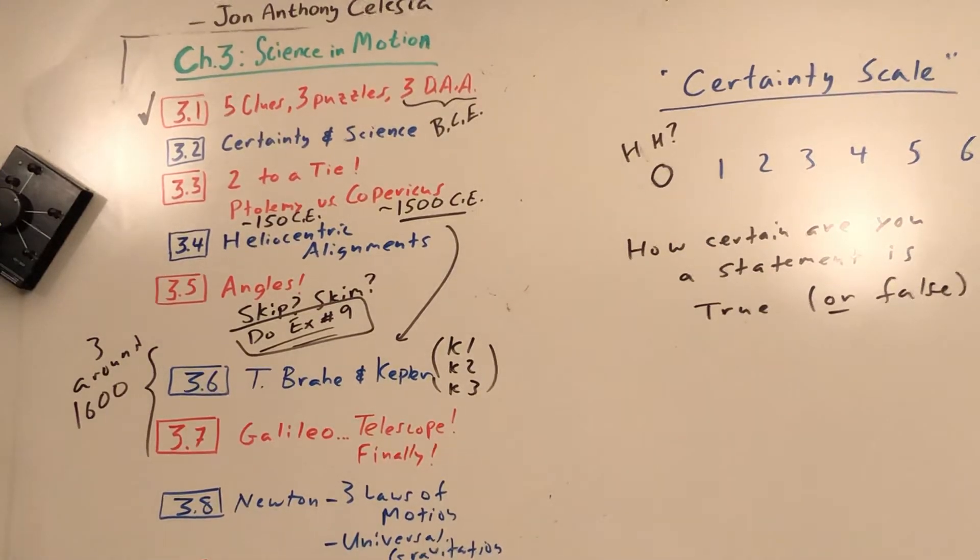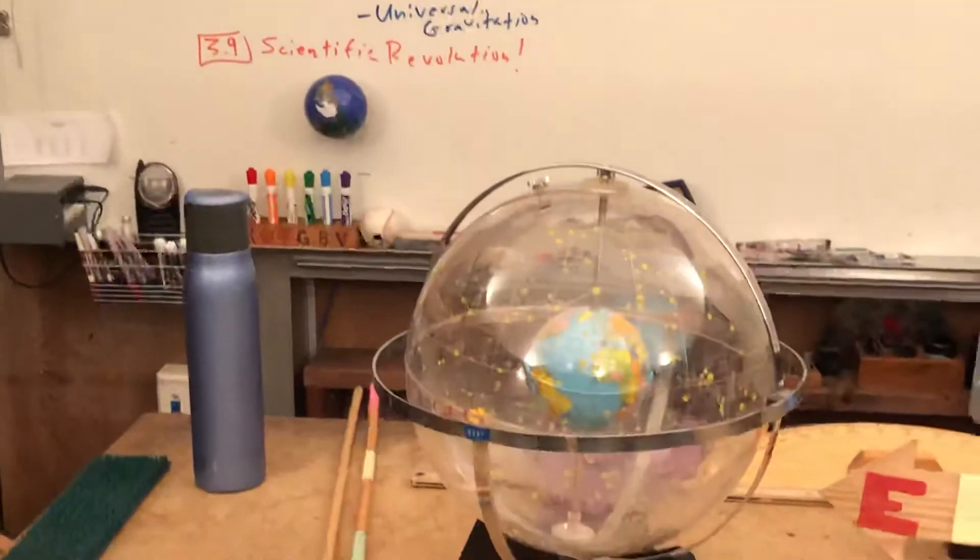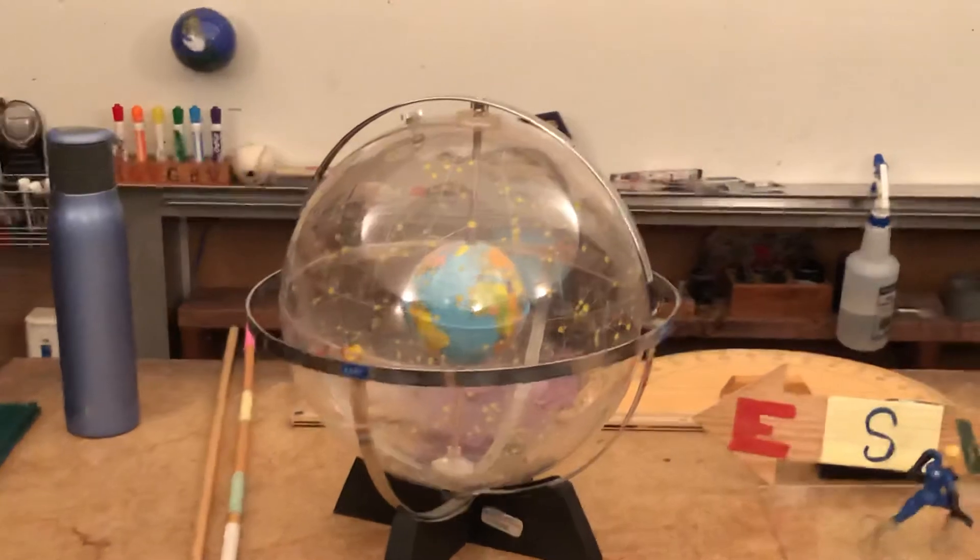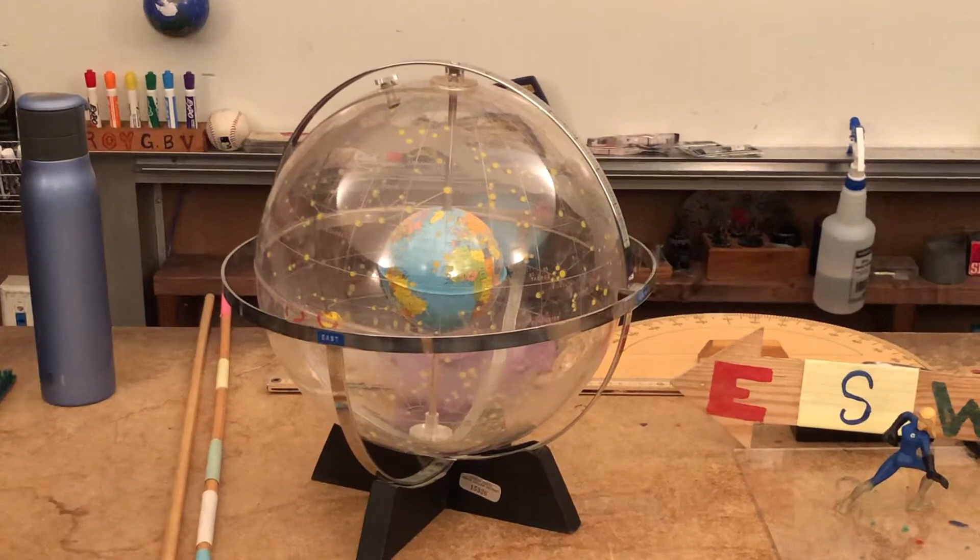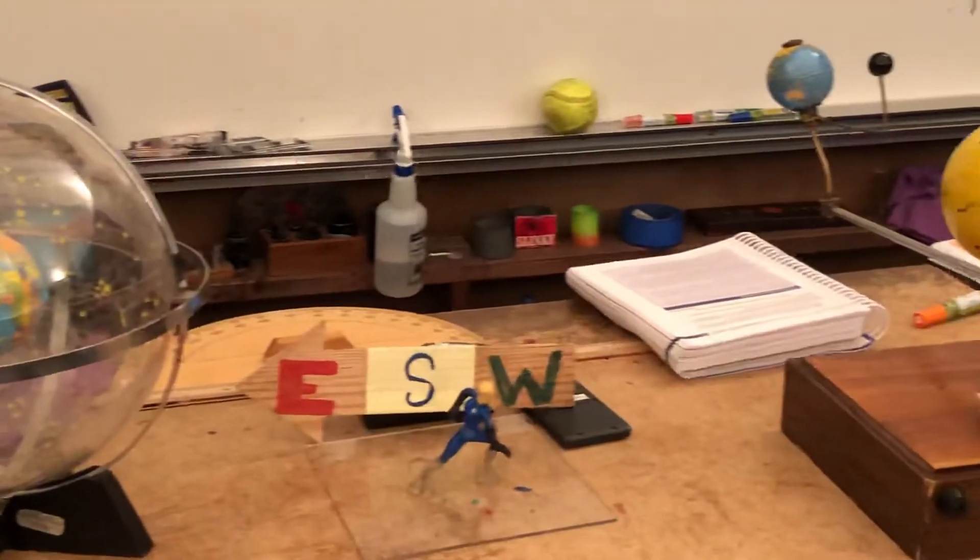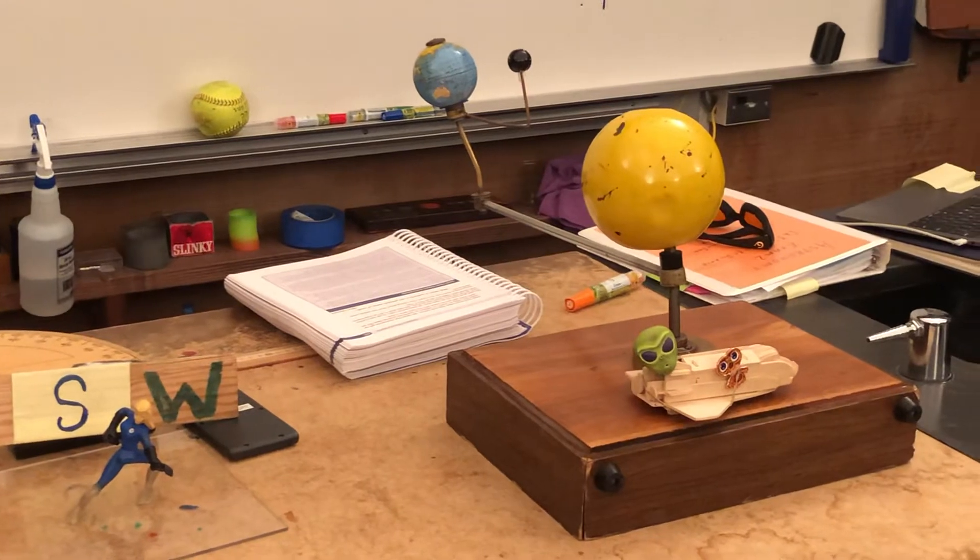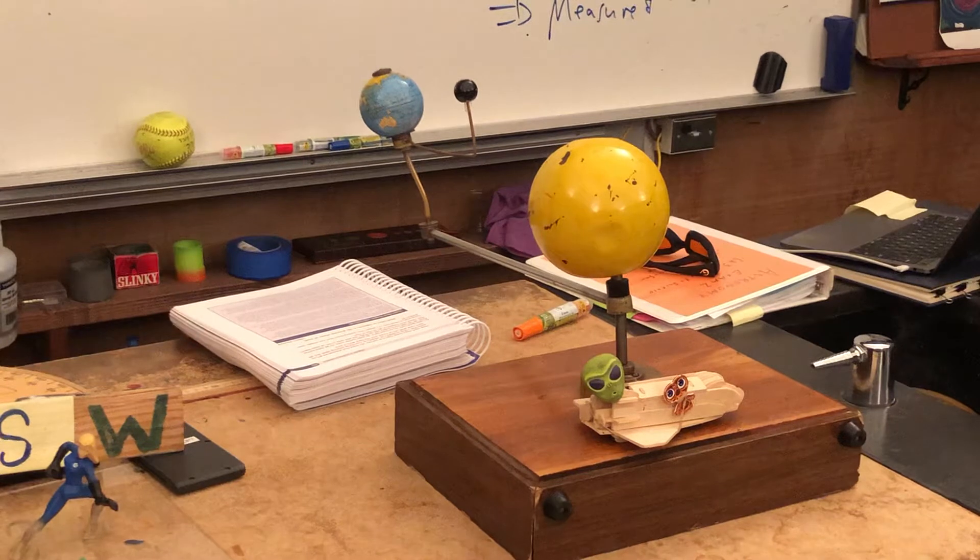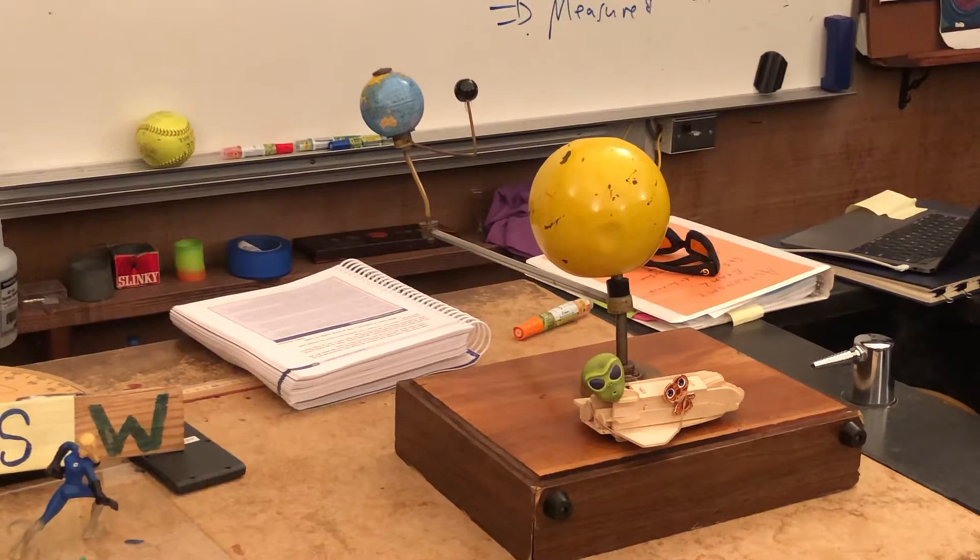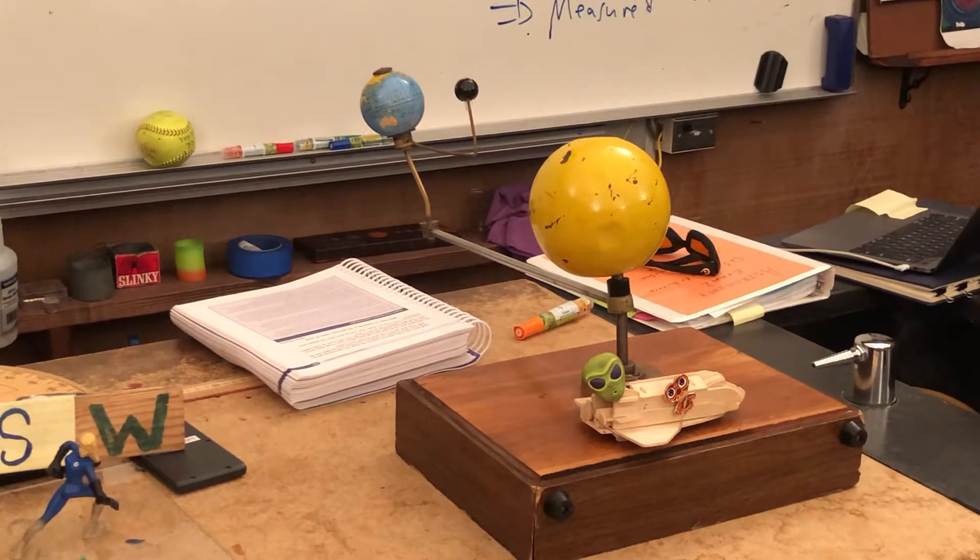So let's talk about some very important notions. Among the puzzles, is everything going around Earth - geo, like geology, geography, Earth-centered, geocentric - or are things in our solar system? They didn't really have that notion, but is Earth a planet, and do those dots and Earth go around sun, heliocentric? What's true?